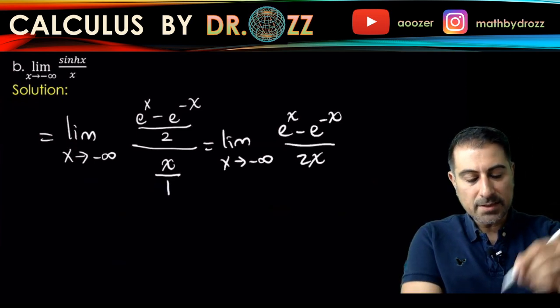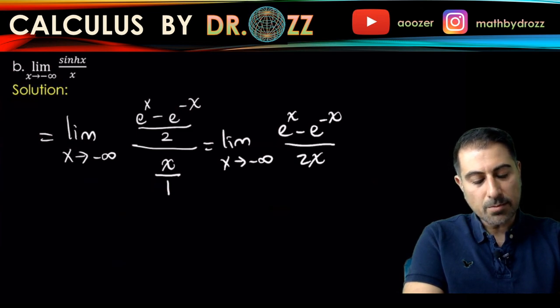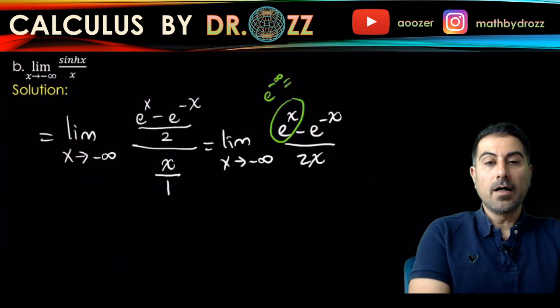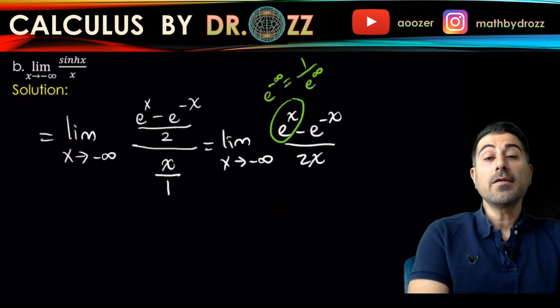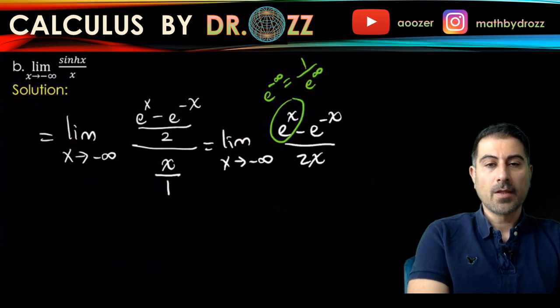As x approaches negative infinity, this one pretends like e to the minus infinity, but you can write it as a reciprocal of e to the infinity. That term tends to zero.